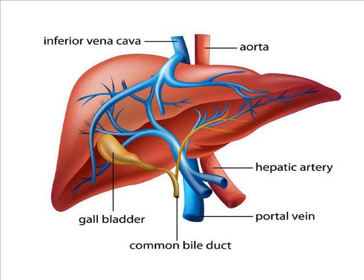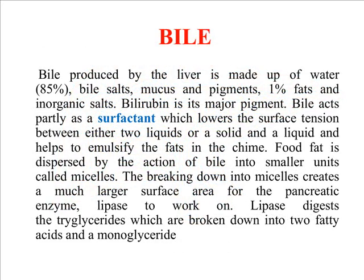This is the basic structure of the liver. Bile is produced by the liver and is made up of about 85% water, bile salts, mucus and pigment, and one percent fat. It also contains inorganic salts. Bilirubin is a major pigment. Bile acts partially as a surfactant, which lowers the surface tension between two liquids or between a solid and a liquid, enabling emulsification of fat in food. Fat is dispersed by the action of bile into smaller units called micelles. Breaking down into micelles creates a much larger surface area for pancreatic enzymes, providing for the proper digestion of lipids.